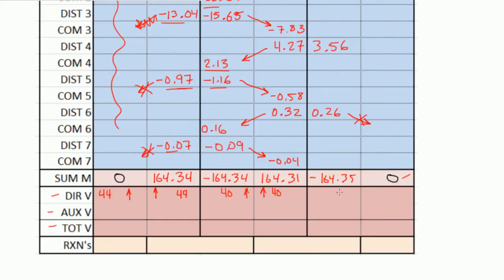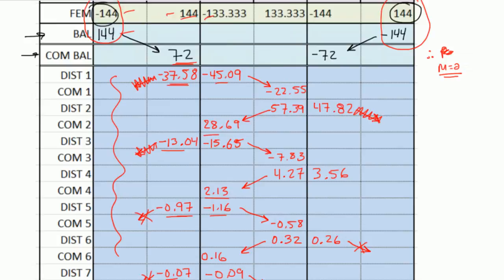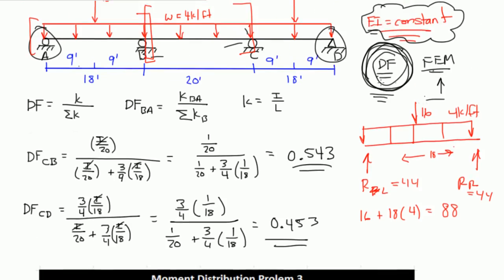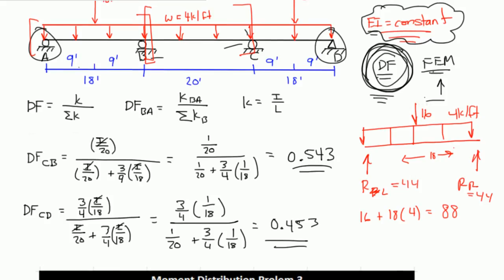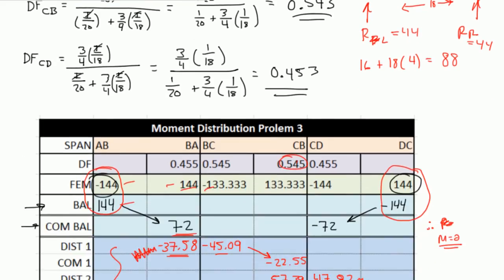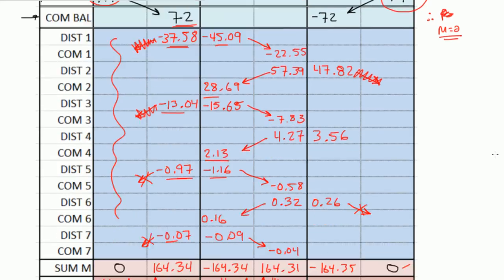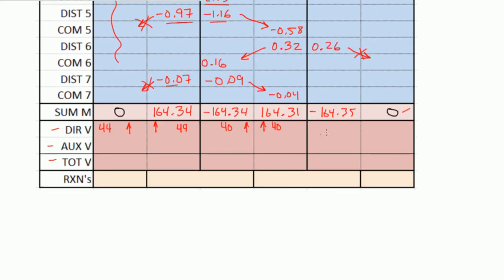And again, for span CD, we have 16 going down, then 4 kips per foot going down over 18 feet. Again, the reactions there are going to be 44 and 44. So 44, 44, and they're both going up.